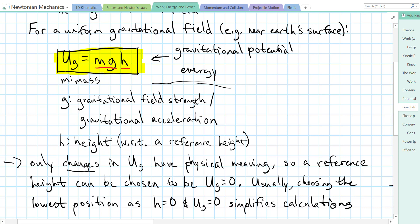The height is chosen above a reference height — usually the ground or the lowest point. It doesn't matter which you choose as long as you're consistent within the problem. The only thing that really matters is the change in potential energy. If you drop an object from 30 meters to 10 meters, or from 50 meters to 30 meters, it's going to have the same change in potential energy. So we usually set the lowest point as zero height, which also makes calculations easier.